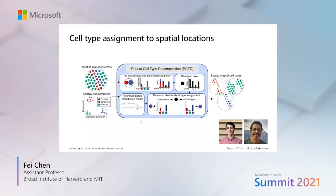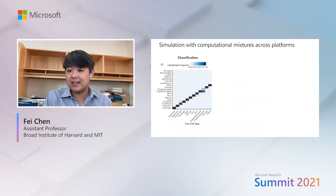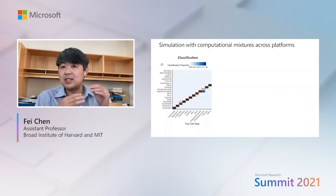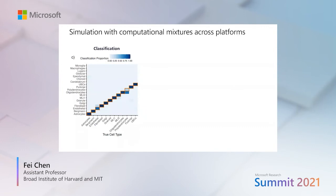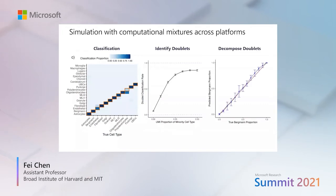RCTD was led by Dylan Cable, a graduate student in my lab co-advised by Rafa Irizarry. We demonstrated through detailed computational simulations with single-cell and single-nucleus datasets that this method can classify cell types across different sequencing modalities — for example, using a single-cell RNA-seq reference to classify single-nucleus RNA-seq data, with the diagonal representing ground truth. Importantly, we can also computationally mix cell types across two datasets and accurately identify mixtures, decomposing pixels into the fractional contents of constituent cell types with high accuracy.